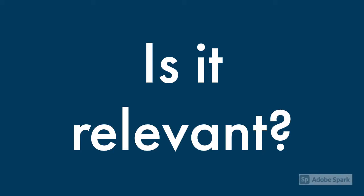When you're deciding which information to read, relevance can be one of the most important things to consider. This can help defeat information overload. There's a lot of information out there about mobile phones, for instance, and nobody could ever read all of it. You would choose different information depending on what you needed it for.